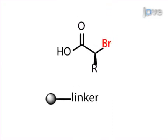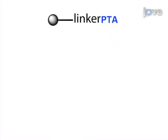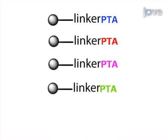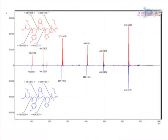A combinatorial library containing PTA and peptoid subunits is synthesized. The final step is to characterize the synthesized library to ensure the quality of the synthesis.